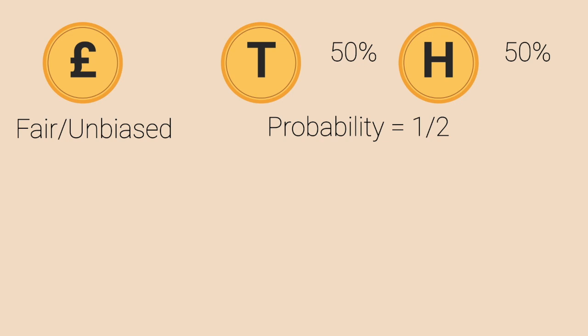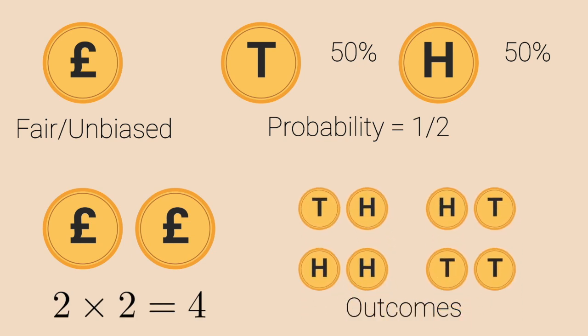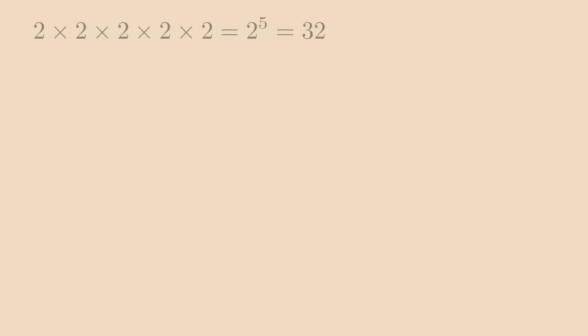Given that each coin toss does not affect the next one, we can safely say they are independent events. Therefore, the number of possible outcomes of several independent events is the product of the number of possible outcomes of each event individually. So for two coin tosses, the number of possible outcomes is 2 x 2, 4. Similarly, for five coin tosses, we will have 2 to the power 5, 32 outcomes.